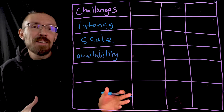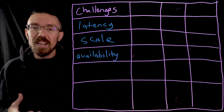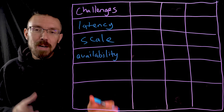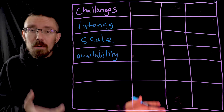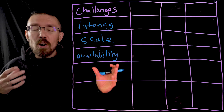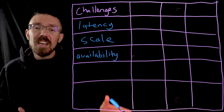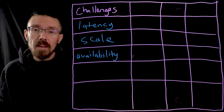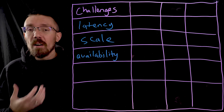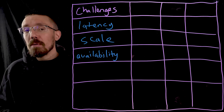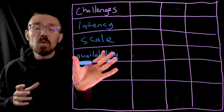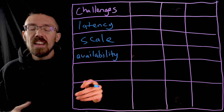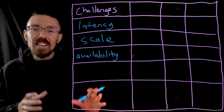Another big challenge is availability — specifically high availability. Obviously there's no industry where it's acceptable for your database to just go down all the time, but in gambling it's especially high stakes because there's so much money on the table. If your users are trying to place a bet and they're not able to, or they place a bet and it doesn't go through because your database is down, you're going to have a bunch of very angry people. And because this is a fast-growing, very competitive industry, a lot of them are probably going to be talking about your competitors.